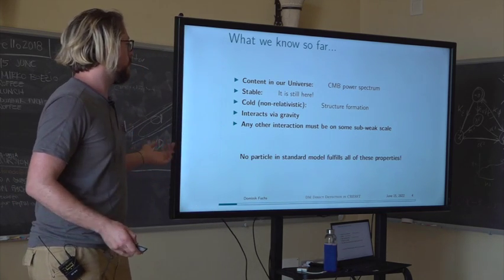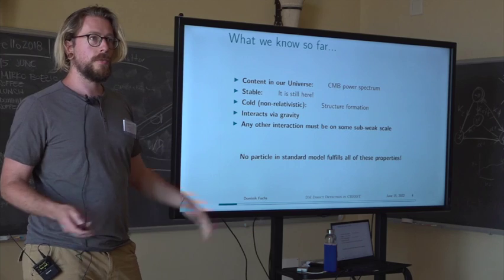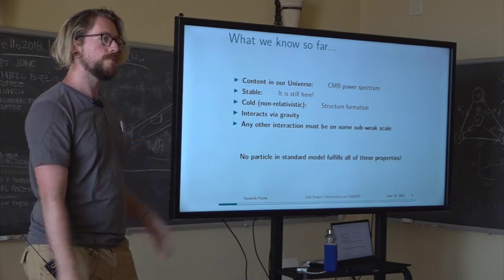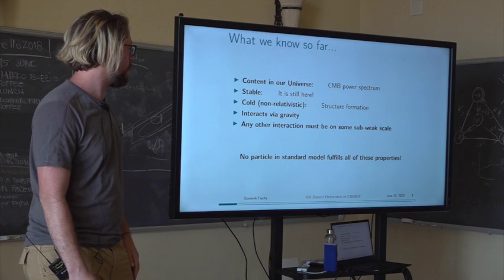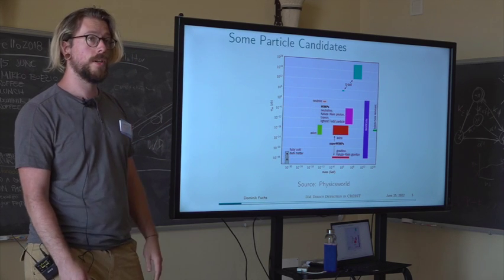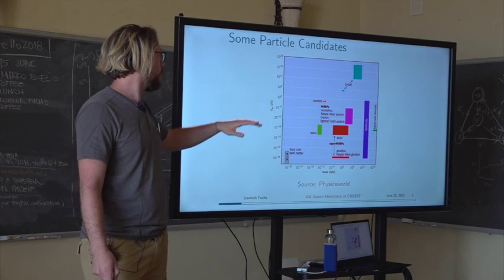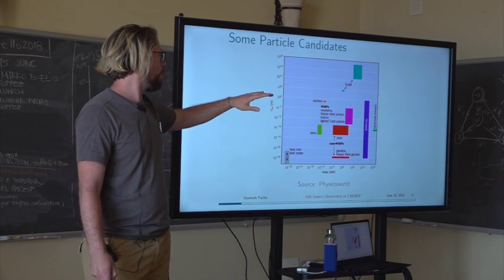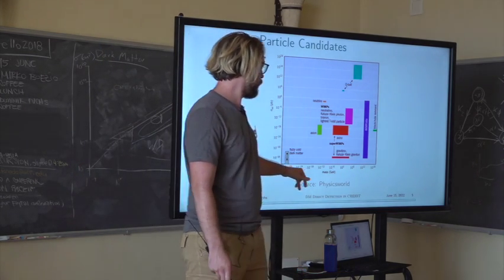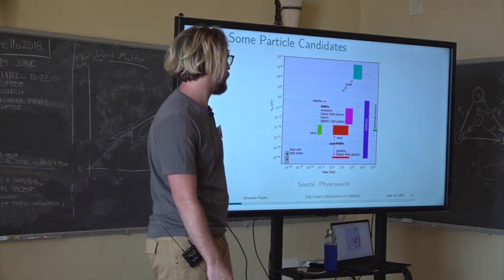The problem is that none of the particles in our standard model fulfill all of these properties together at once. So a lot of clever people came up with many different ideas — we've seen plots with a large variety of particle candidates spanning a huge range of masses and interaction cross sections.